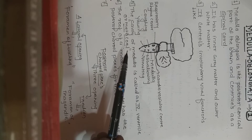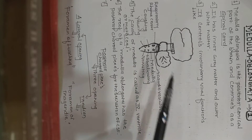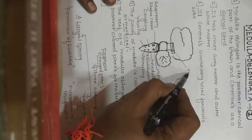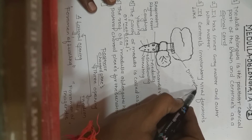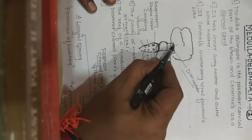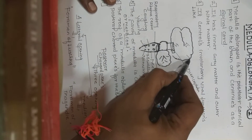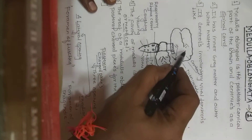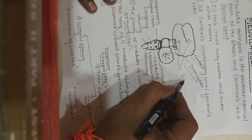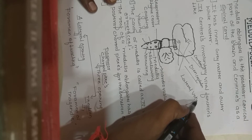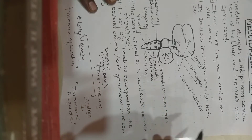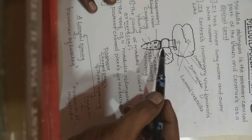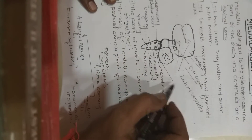The cavity present in the medulla is called the fourth ventricle, also known as the metacoel. As we saw in the last lecture, the third ventricle is present in the diencephalon. The first two ventricles are present in the cerebrum, and the fourth cavity is in the medulla.